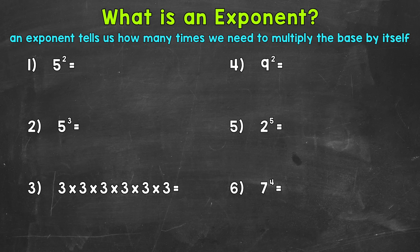Let's jump right into our examples, starting with number 1, where we have 5 to the power of 2. You'll notice that we have a larger number, the 5, and then a smaller number in the corner, the 2. The larger number is called the base — so the 5 is our base. The 2 is the exponent. The exponent tells us how many times we need to multiply the base by itself.